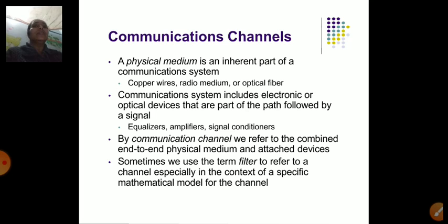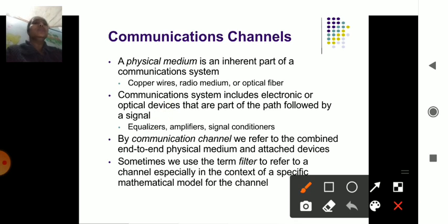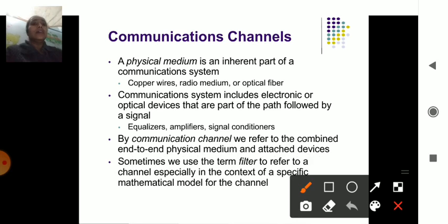A communication channel declares a path which helps in passing information. Between sender and receiver you have equalizers — an equalizer balances your signals. An amplifier is also used for each channel where information has to be transferred, handling specific channel variations.